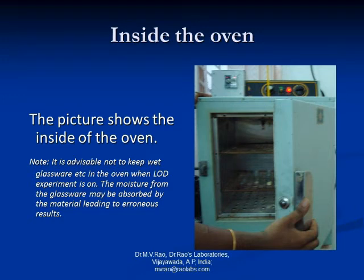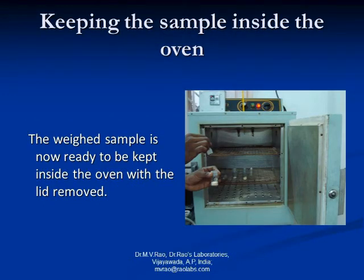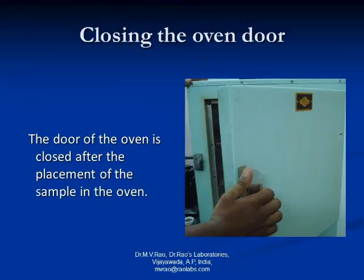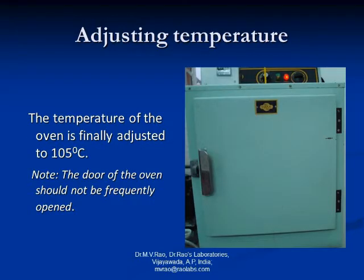This is the inside of the oven. It is advisable not to keep wet glassware in the oven when the loss on drying experiment is on, as moisture from the glassware may be absorbed by the material leading to erroneous results. The weighed sample is now ready to be kept inside the oven with the lid removed. The lid must be kept separately in the oven. The sample is placed inside the oven as shown, and the door is closed. The temperature of the oven should be finally 105 degrees centigrade, and the door should not be frequently opened.